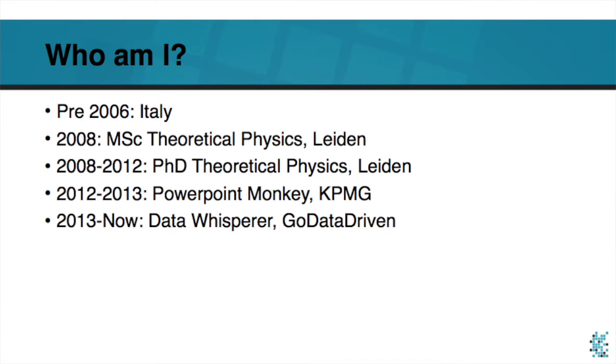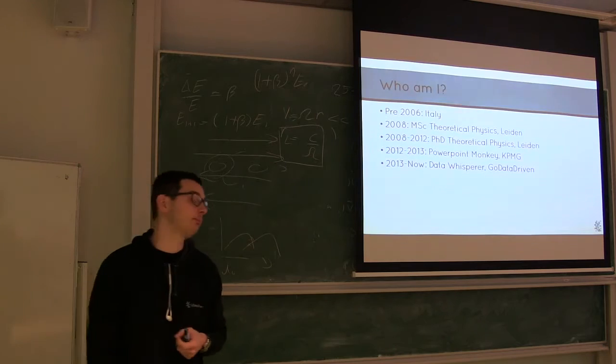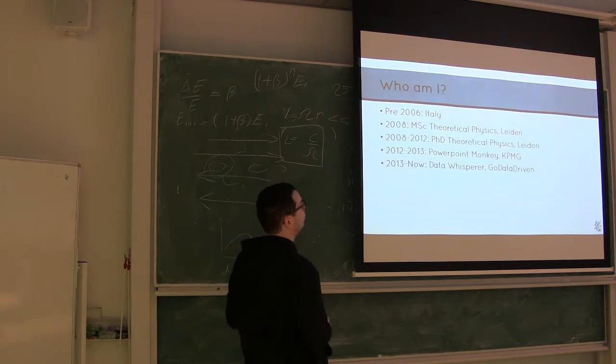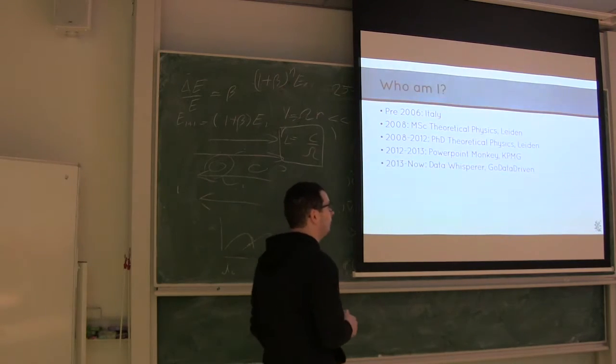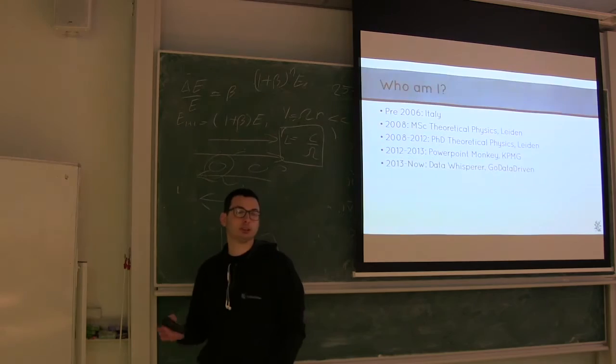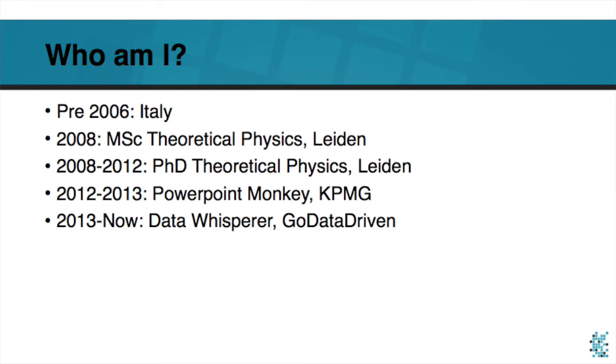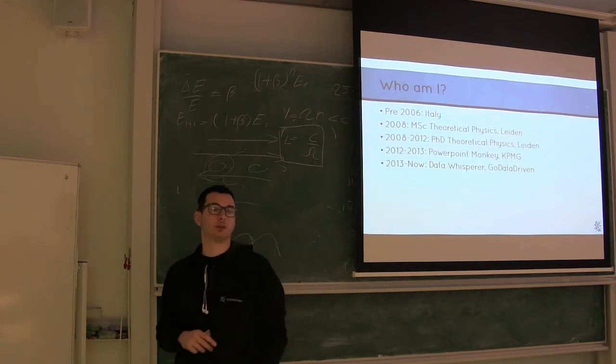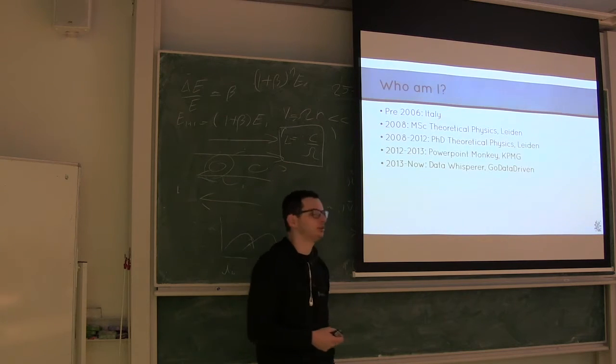So who am I? Before 2006 I was in Italy. I did a bachelor's in physics. Then I came to Leiden, where somehow I managed to get a master and a PhD in theoretical physics doing DNA stuff. And then I went for one year at KPMG, where I was PowerPoint monkey. And in practice, I was doing software code reviews for large companies, financial institutions, the government, and so on. And after that, GoDataDriven made me an offer I couldn't refuse. And it likely involved no dead horses. So I switched over. And I'm a data whisperer since then with GoDataDriven. And it's two years that I work at ING, plus other financial institutions client.